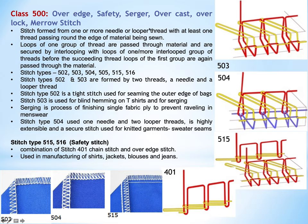They are also called serger stitches because a serging process can be carried out with the help of these stitches. Serging is where the raw edge of the fabric is finished — when these loops cover the fabric edge, preventing threads from being pulled out or raveling. This stitch type and its sub-classes generally find application for knitted fabrics and knitted garments.